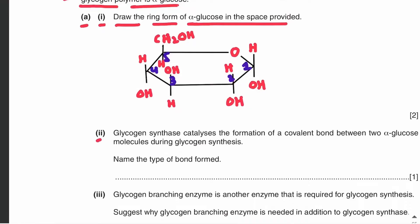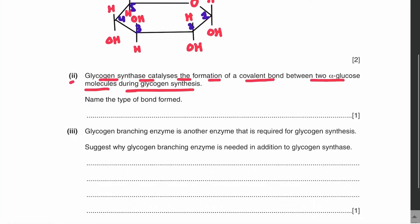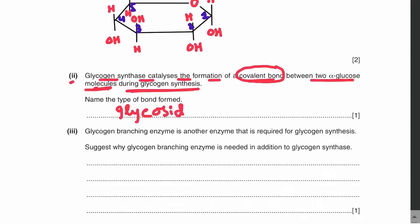Let's move on to part two. Glycogen synthase catalyzes the formation of a covalent bond between two alpha glucose molecules during glycogen synthesis. The question asks us to name the type of bond formed. The covalent bond formed between two alpha glucose molecules in glycogen is a glycosidic bond. Always remember that whenever two monosaccharides join, a glycosidic bond is formed.